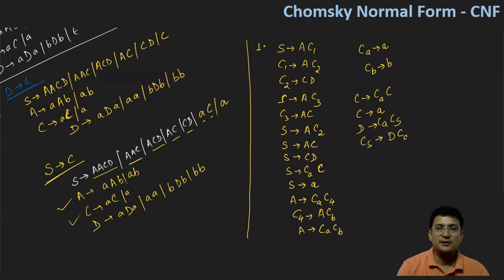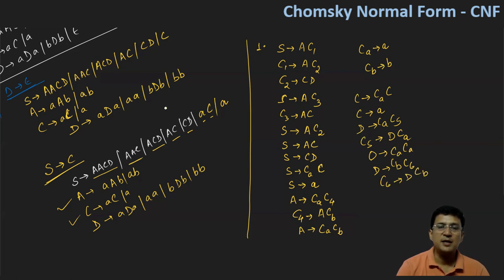After this we look at productions starting with C. C produces AC and small a. C produces small a is already in Chomsky's normal form. Then we look at D productions. D produces aDA, so we can say this is Ca and let's call it C5. C5 generates Da, which is D followed by Ca. Then D produces AA, which can be written as Ca followed by Ca. Then D produces BDB, which is CB followed by some C6. C6 equals D followed by CB.